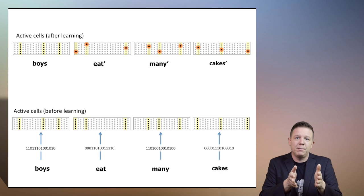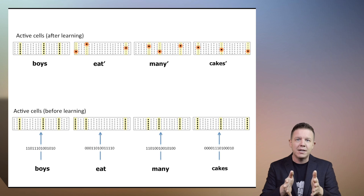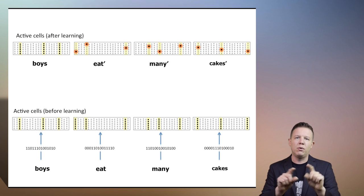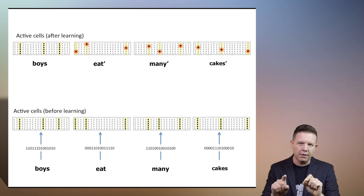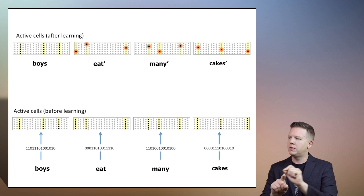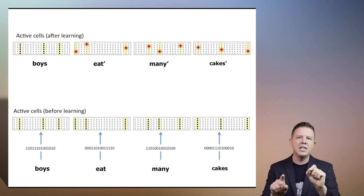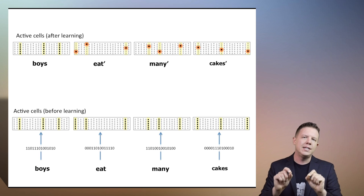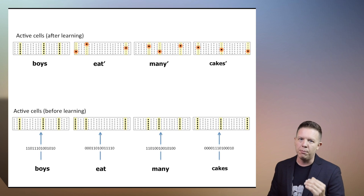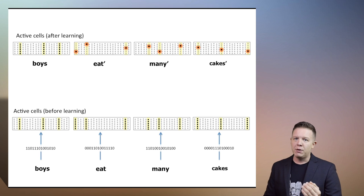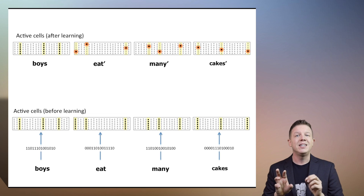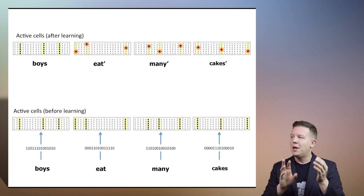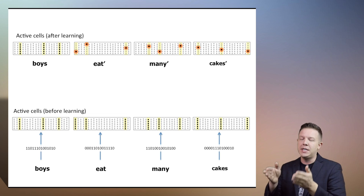Then the next pattern for 'eat' comes and we've identified not only that this is a spatial pattern for eat, but it is within the context of the spatial pattern 'boys.' So we're going to call this 'eat prime' — it's not just eat, it's eat with an additional temporal component. Same thing with 'many' — 'many prime' — which is the spatial representation for many with the additional context of many in the context of boys.